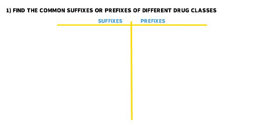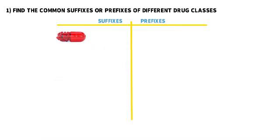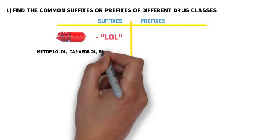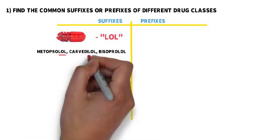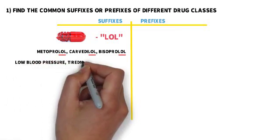For example, cardiac drug class beta blockers all end in the same suffix, LOL, such as metoprolol, carvedilol, and bisoprolol. The drugs in this class work by blocking beta-1 receptors in the heart and slowing down the heart rate. This could lead to symptoms that are directly related to a slow heart rate, such as lower blood pressure, tiredness, dizziness, etc.